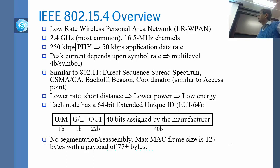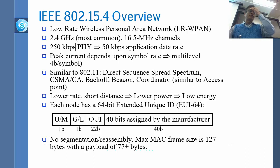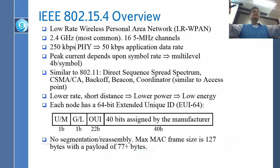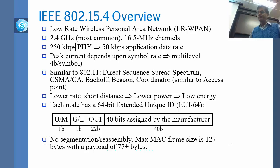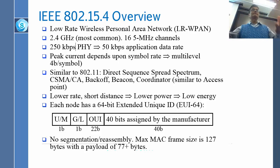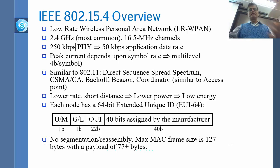Things which are similar to 802.11 are: direct sequence spread spectrum, CSMA/CA, back-off, beacon, and coordinator. This also uses direct sequence spread spectrum, which means you take one symbol and make it into many chips, and then you send those chips using a code. CSMA/CA — as I was describing in the other lecture — you sense the channel, and if there is nobody, then you do a random back-off number and then you start.